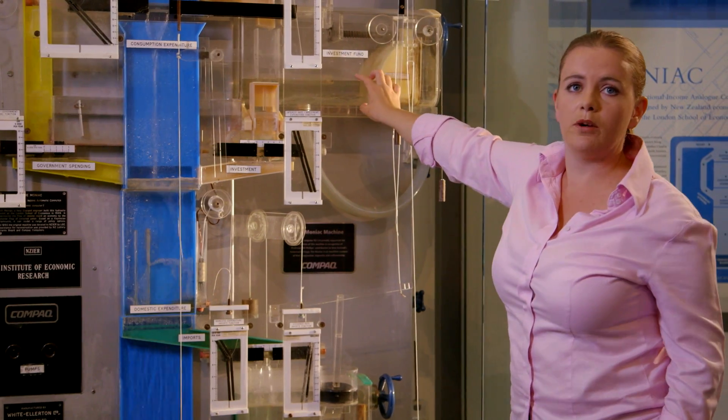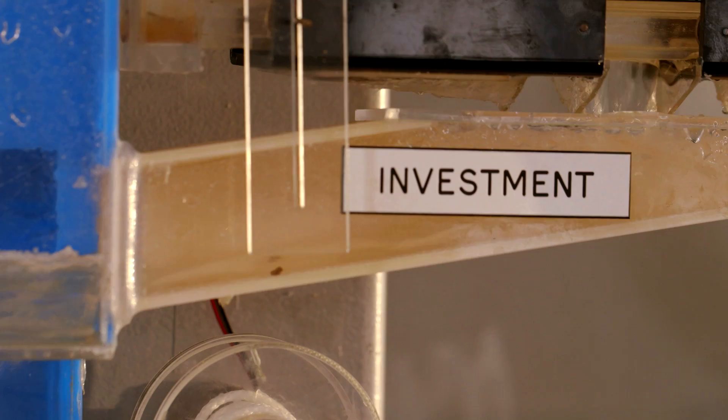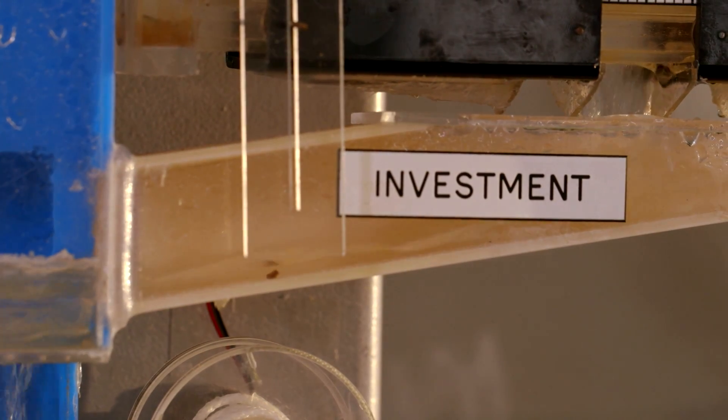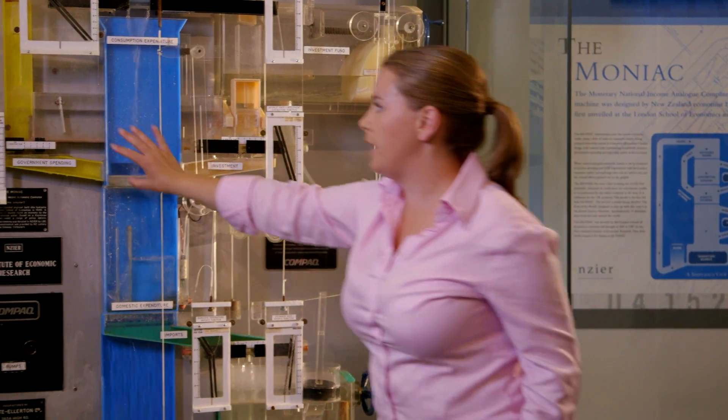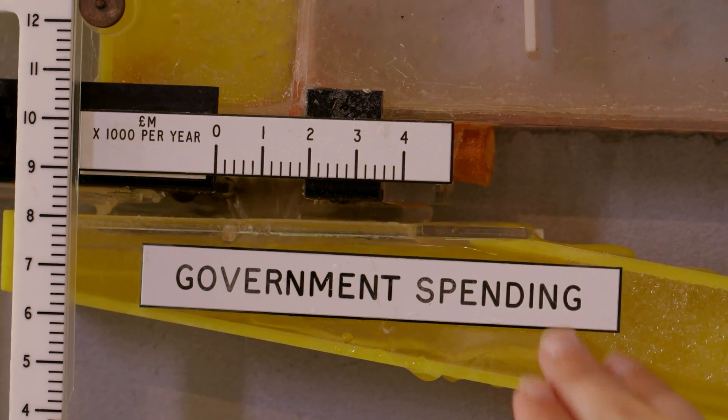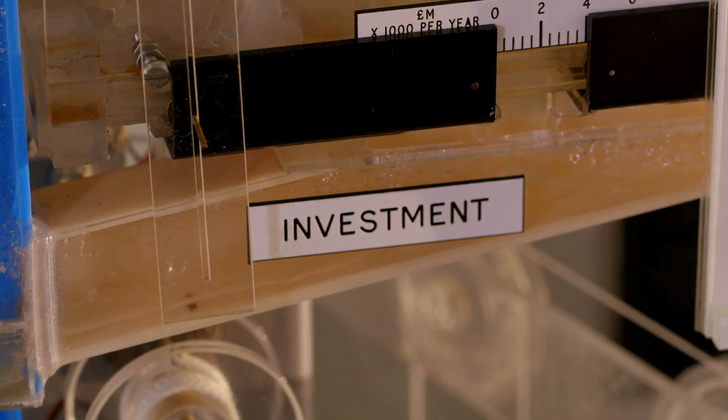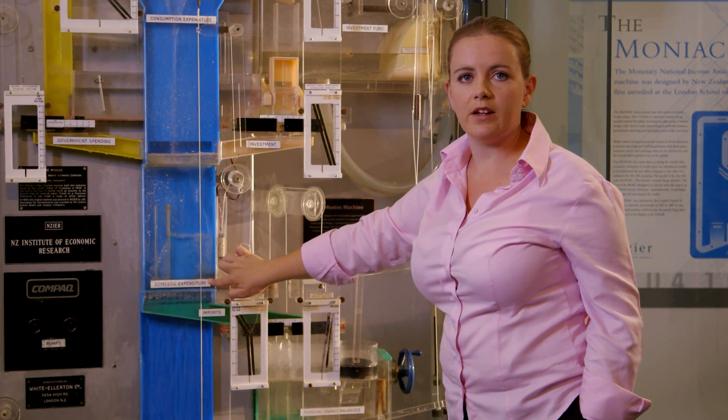In this investment fund here, which helps determine the level of interest rates, this will also determine how much investment firms undertake. So if we add these three components up, this is our domestic part of the economy. We've got government spending, plus consumption, plus investment. And this adds up to domestic expenditure, so the way all this water flows around.